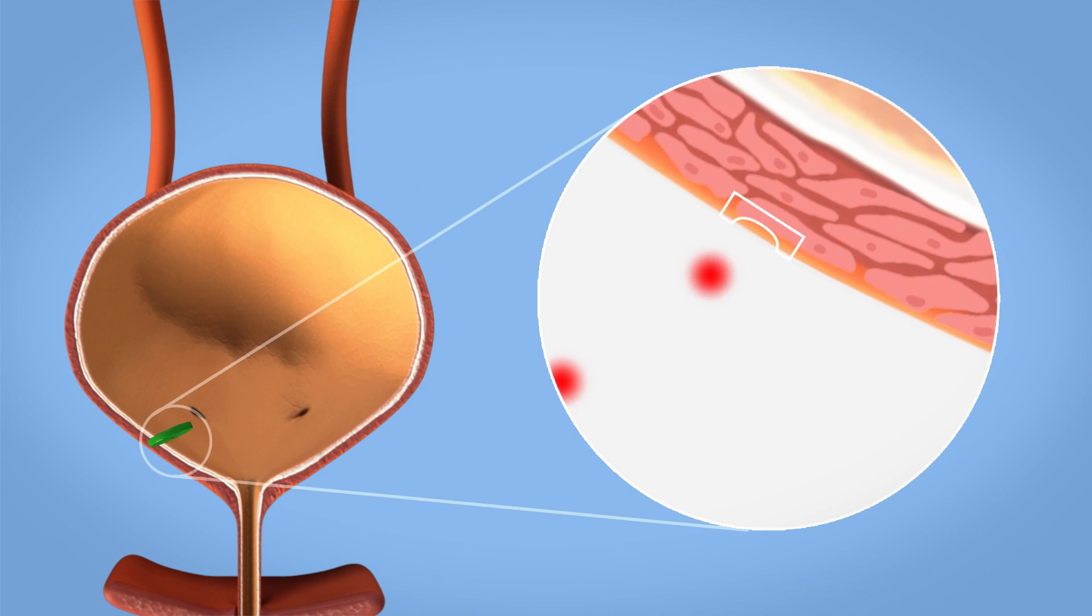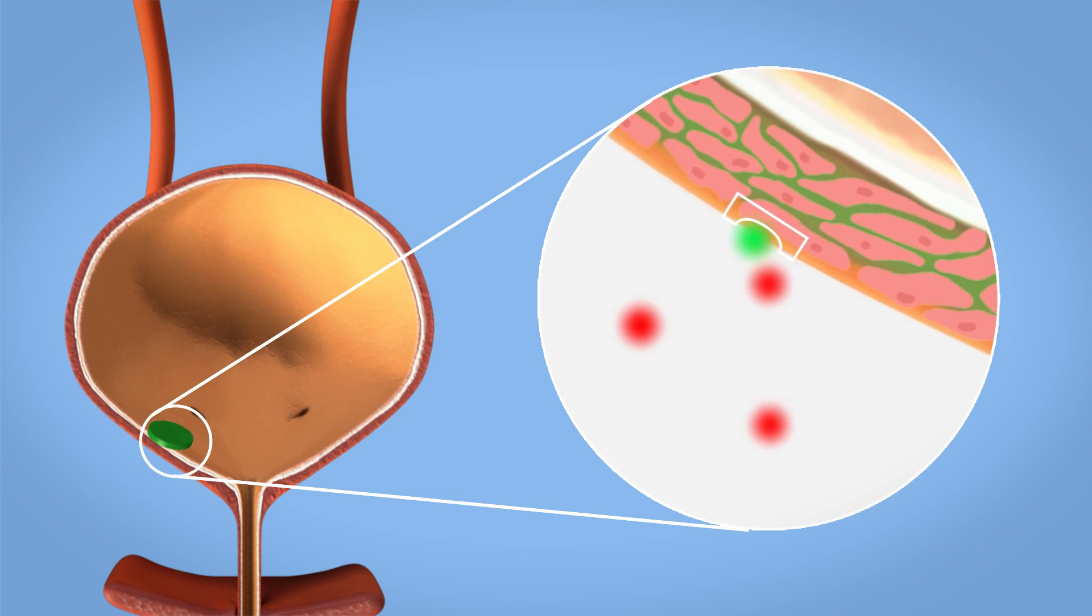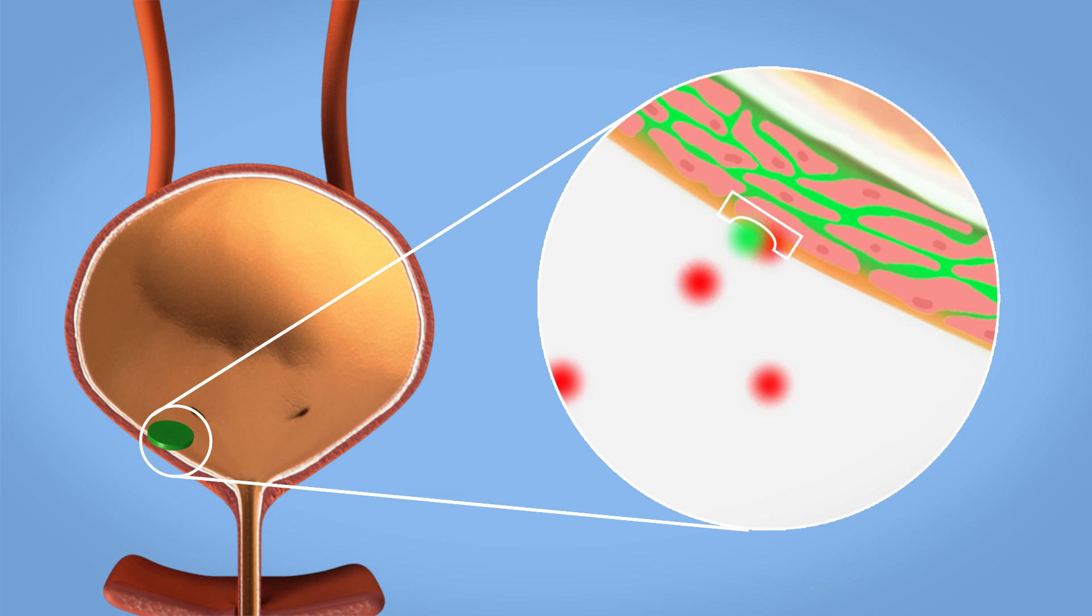Anti-muscarinics bind to specific sites on the bladder muscle, which then leads to a reduction in signals that tell the muscle to contract. As a result, your bladder capacity increases and you will feel the need to urinate less often.